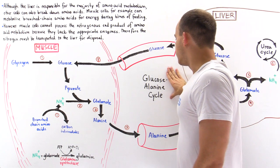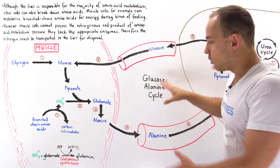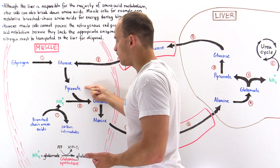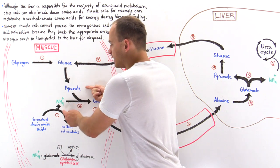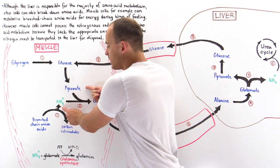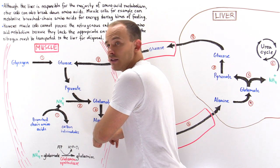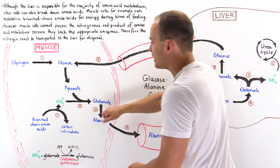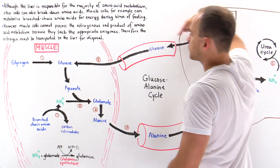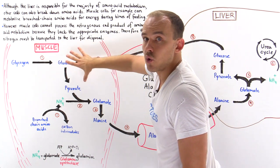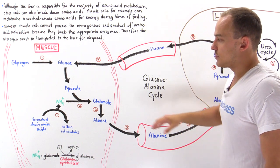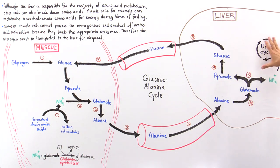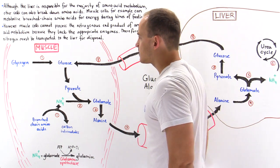This is known as the glucose-alanine cycle. We call it that because we utilize glucose to form pyruvate, use it to attach the ammonium, and form alanine. It cycles between glucose and alanine, and the glucose is ultimately returned back to its source — the skeletal muscle cell — but the ammonium is transported to the liver and is not returned back to the skeletal muscle.